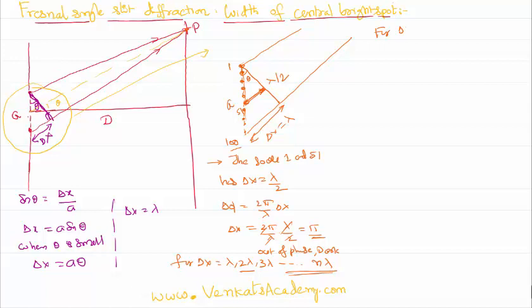So the resultant of all of them is going to be a dark spot. So for delta x equal to n lambda, on the screen we see dark.